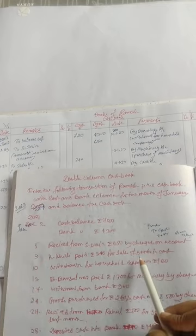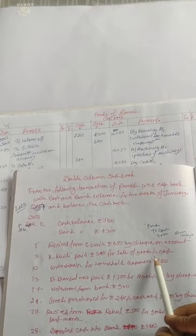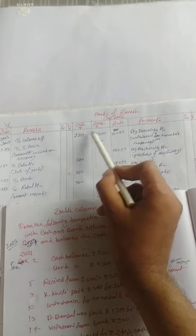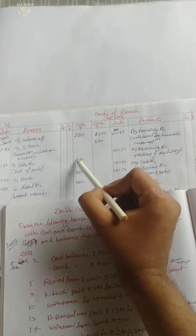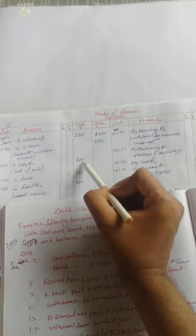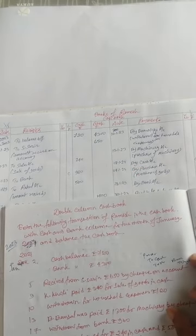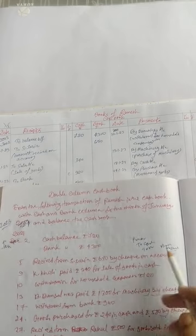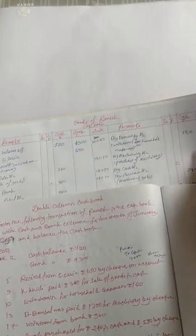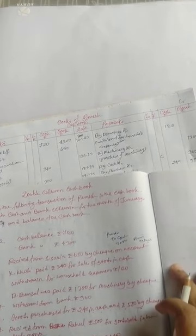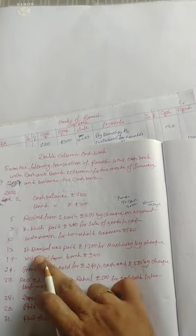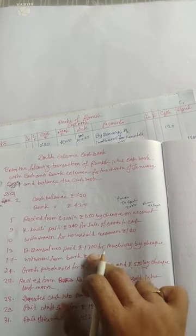We write 'To Asrin 650'. Next, Koli paid 340 for sale of goods in cash. The journal entry is: cash account debit to sales account — 340 written in the cash column. Next, withdrawal for household expenses rupees 120 — this is by drawings account.